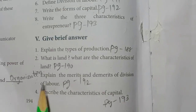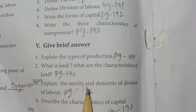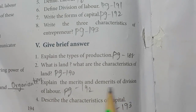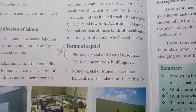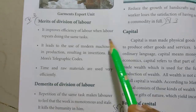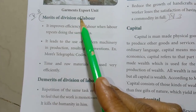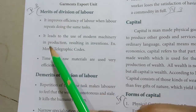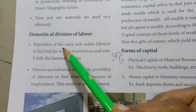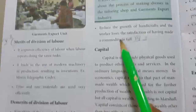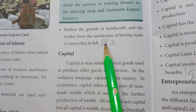Third one: Explain the Merits and Demerits of Division of Labour. Page No. 192. Under Merits and Demerits of Division of Labour — write three points for Merits and three points for Demerits.